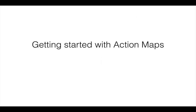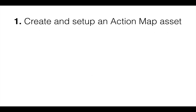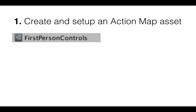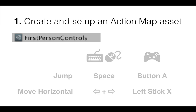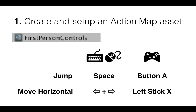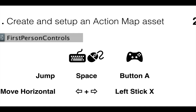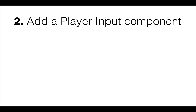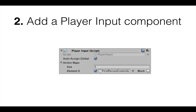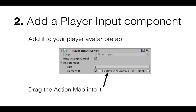So how do you get started using action maps? Let's take it from the beginning in four simple steps. First, you create and set up an action map asset. This is a new asset type you create like any other asset, and in its inspector you set up the actions, control schemes, and bindings. Second, add a player input component to your player avatar prefab — this is a new component that handles player input — and drag the action map asset into this component.